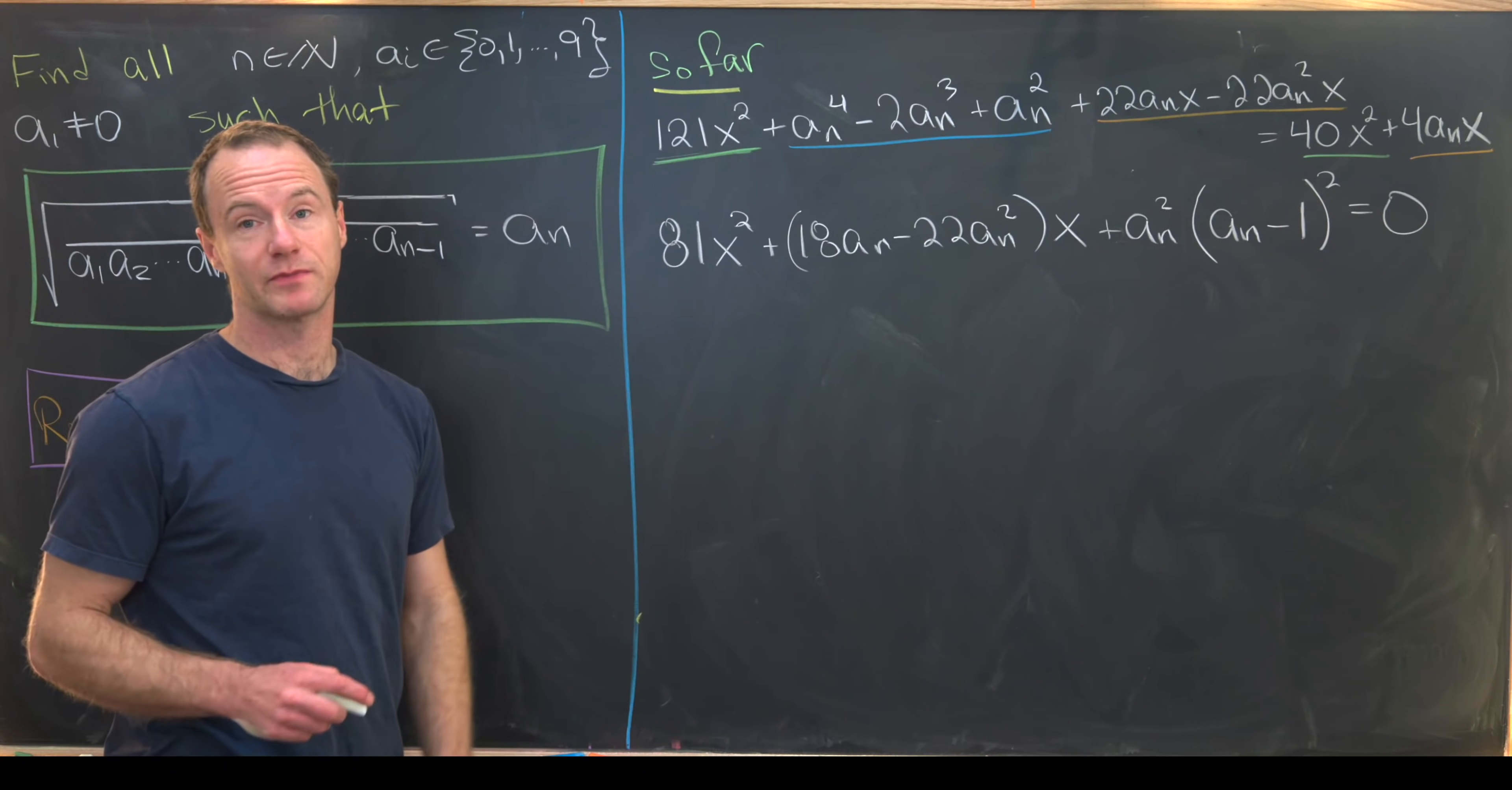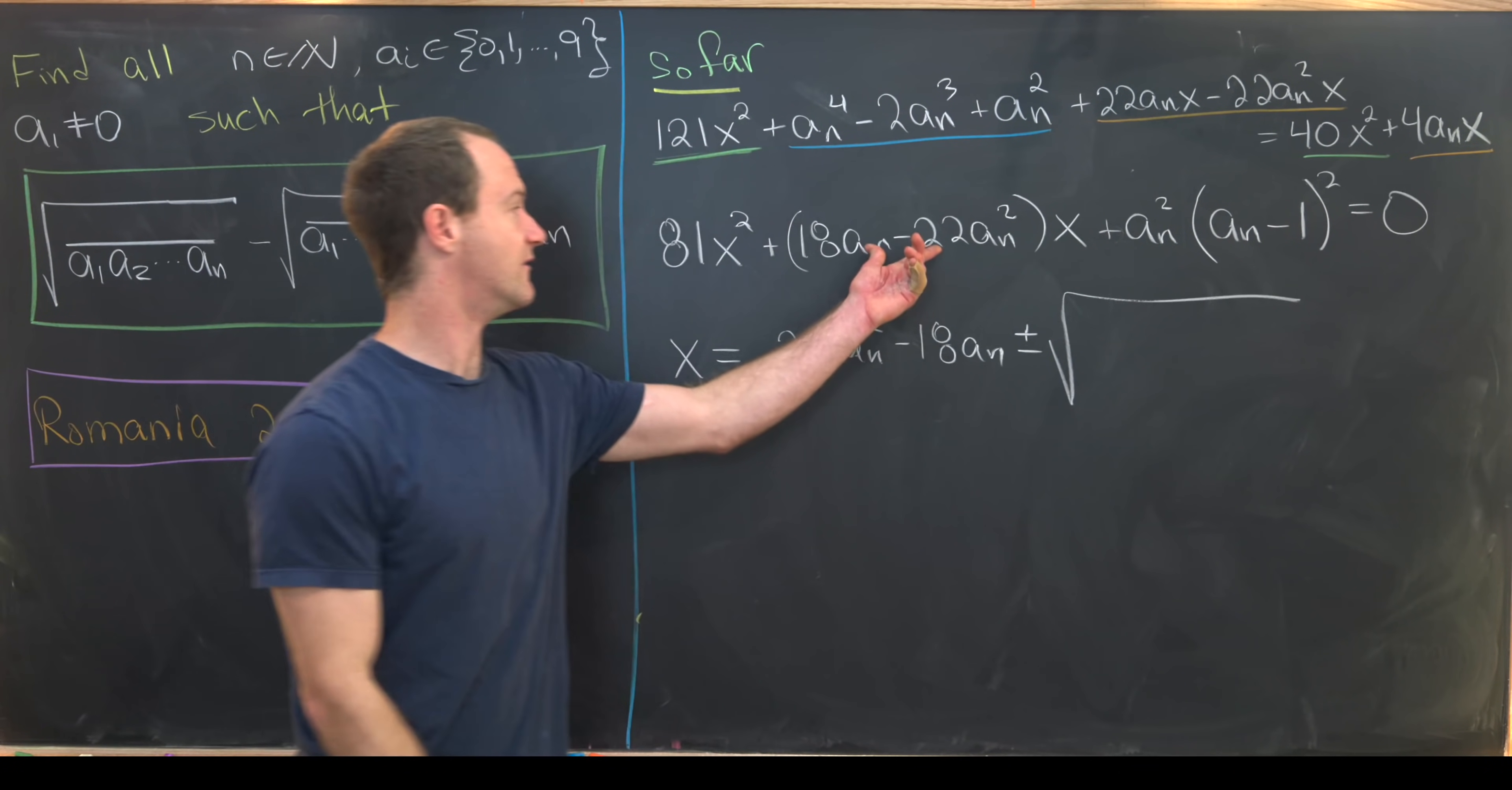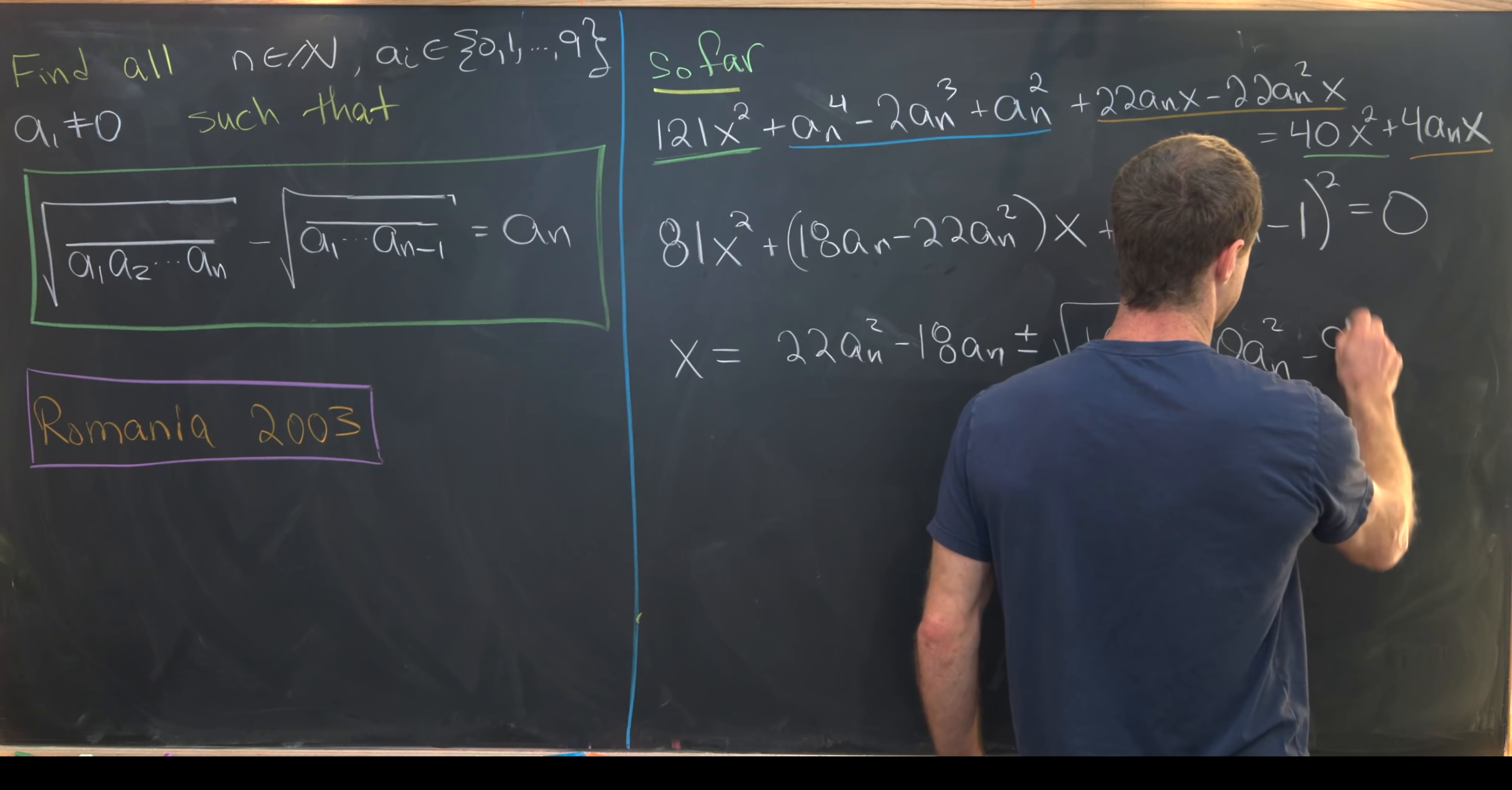And now we've just got a really gnarly application of the quadratic formula. So notice we'll have x is equal to negative our b term, plus or minus the square root of this guy squared minus 4 times this guy times that guy. So that's like kind of a mouthful, but it's not actually technically that difficult. So I'll let you guys check that. What you end up with is the square root of 16an² times the quantity 10an² minus 9.